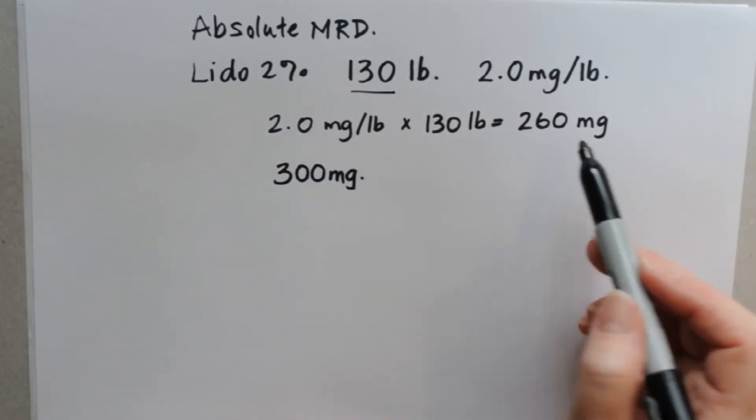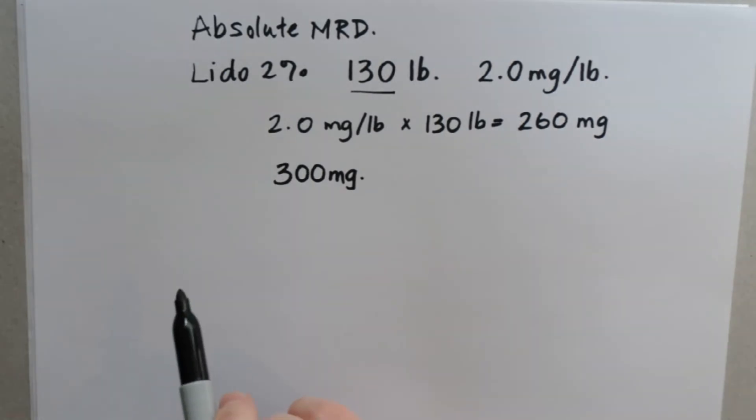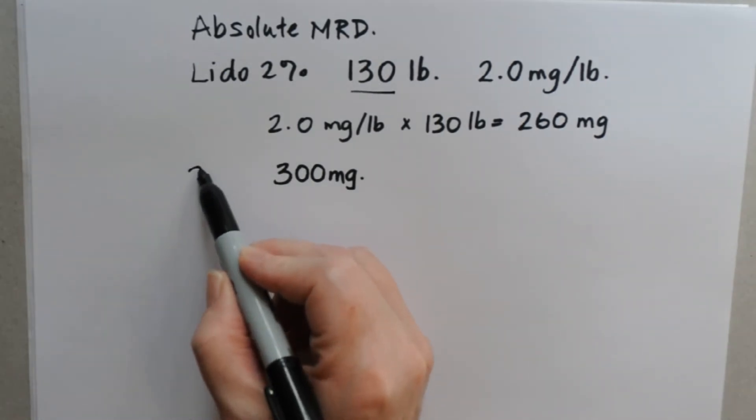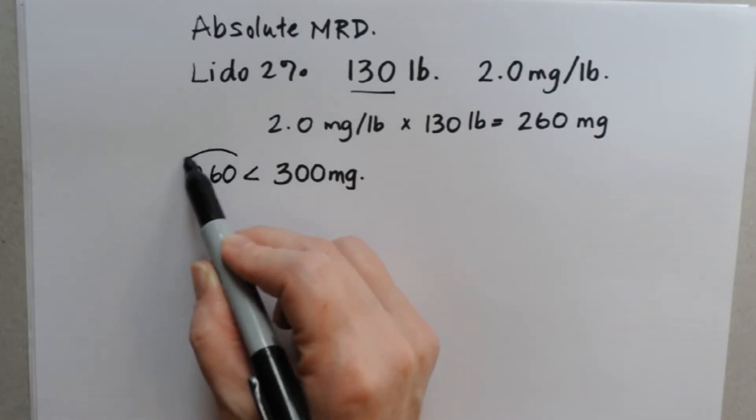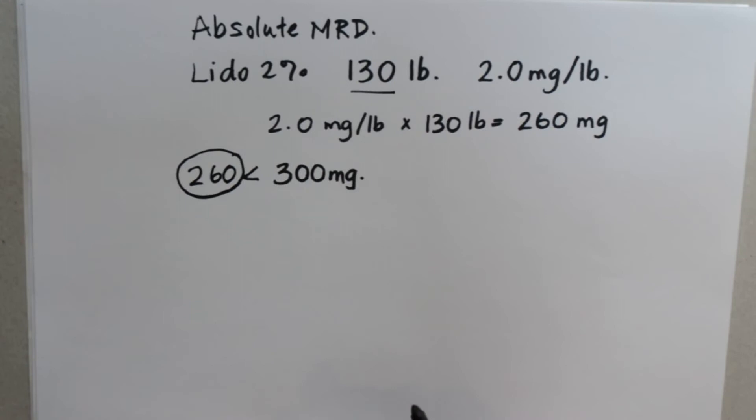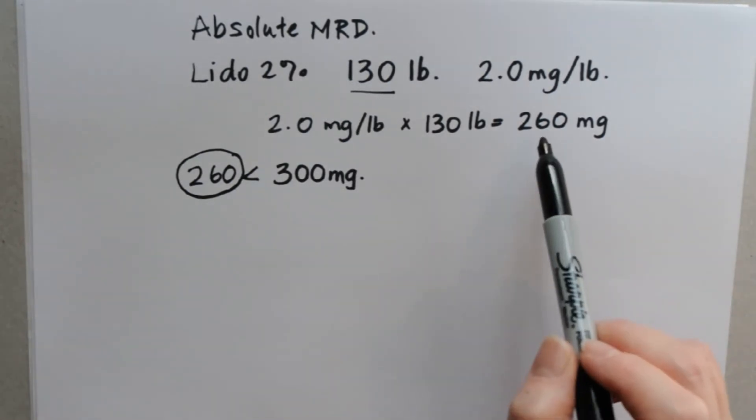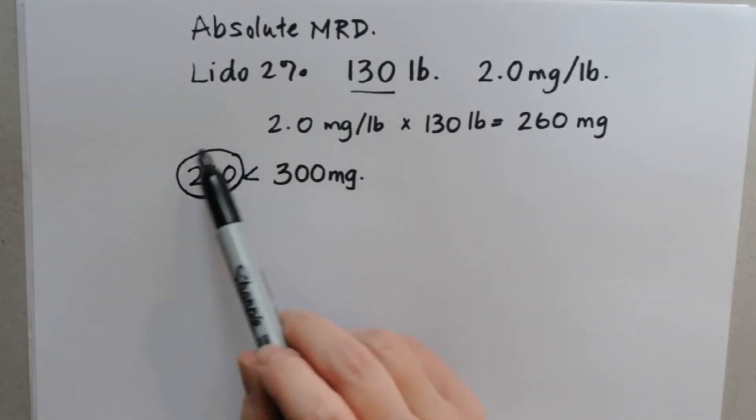So what you want to do is you want to compare your answer to the absolute dose, and whichever one of these is the lesser, that's the one that's going to be our actual maximum dose. So basically you want to compare the upper limit to the calculation you get and choose the lower one as your answer.